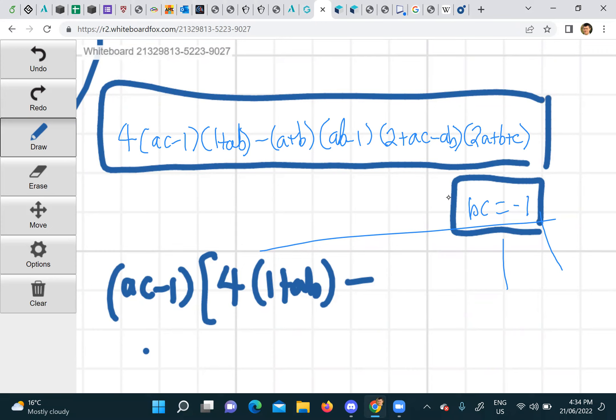If you can't see how to do it, the hint is we're gonna factorize out an (ac - 1). That's the hint, think about it. I'm gonna tell you the answer now, so don't just watch the answer.